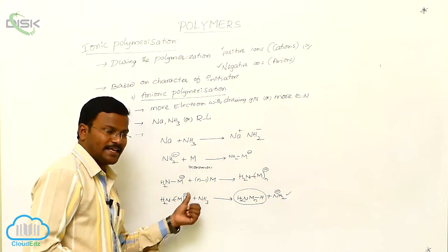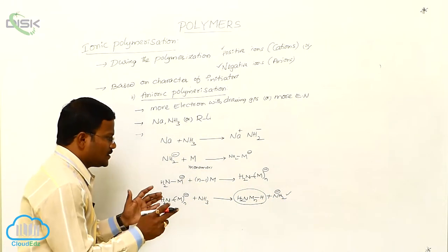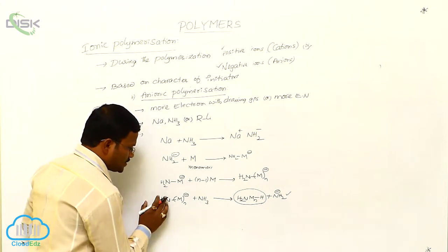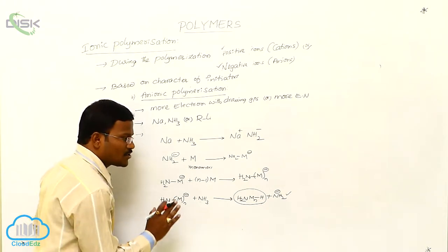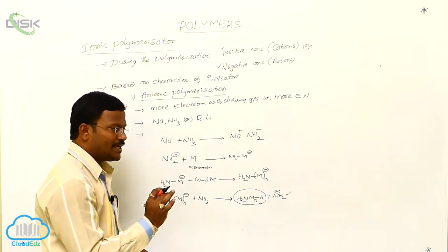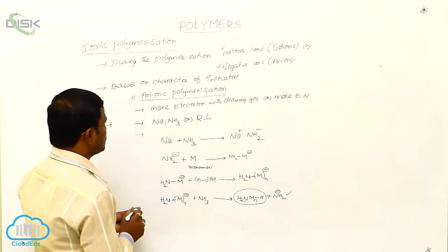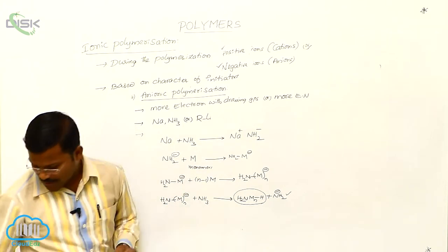It continuously takes place. For that reason, this is not a termination step. It is called a propagation step only. So this is anionic polymerization.